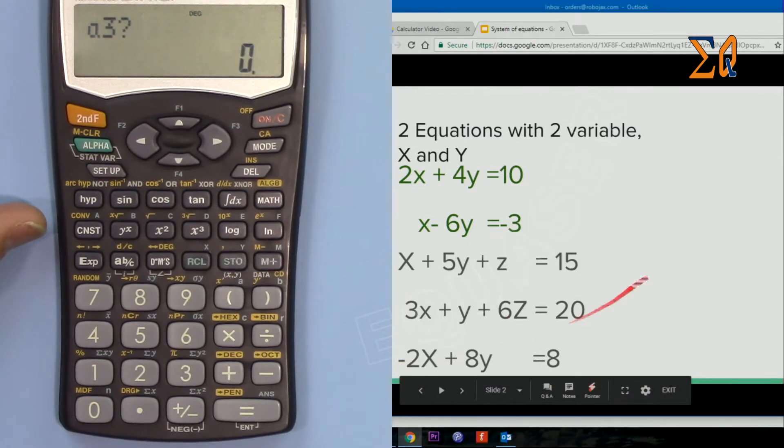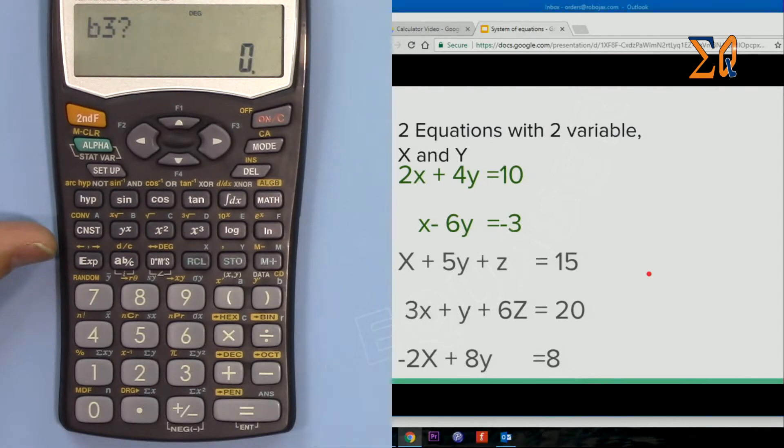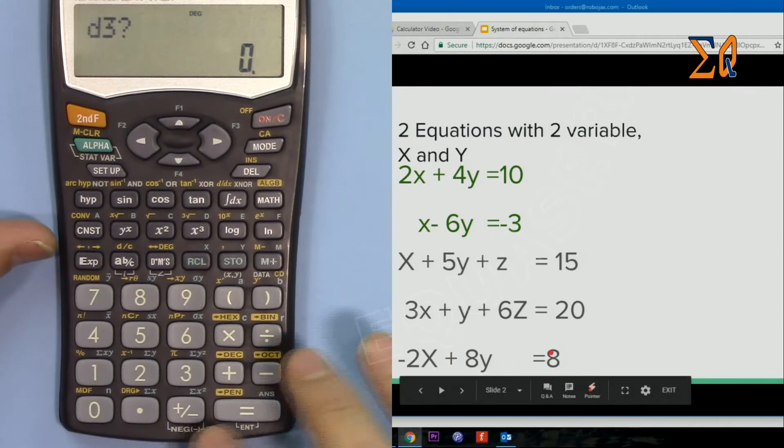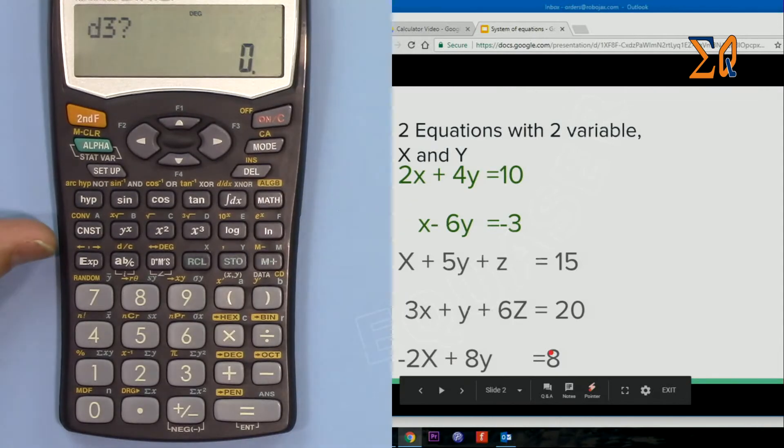So it goes to the third equation. Coefficient of X is minus 2, minus 2, and then B is 8. And here Z is 0 and then you could just press equal sign because 0 is already there, and then 8.